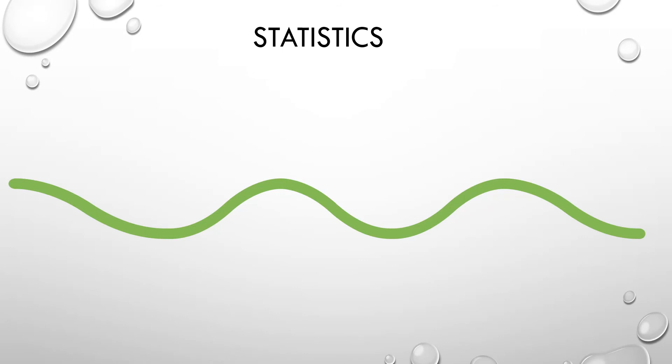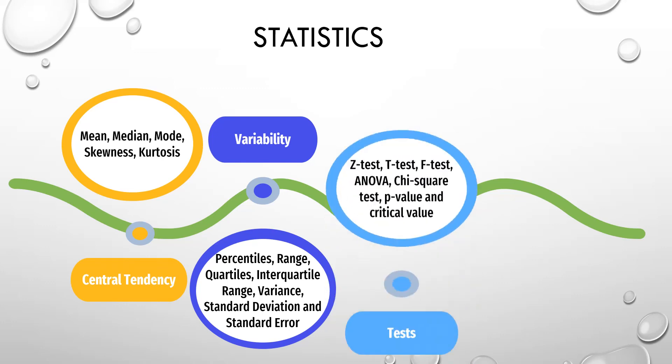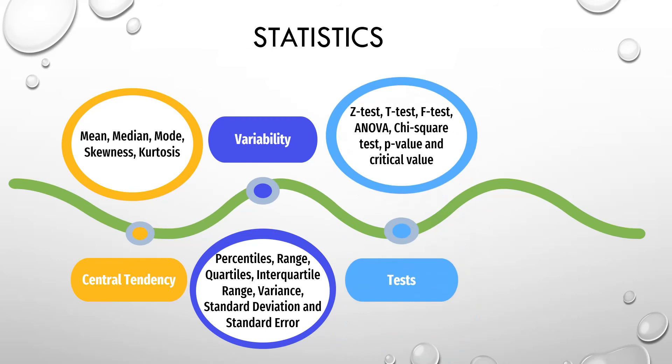Statistics for data science can be classified into four main points. The first one is central tendency, which covers the mean, median, mode, skewness, and kurtosis. The second one is variability - in variability we talk about percentiles, range, quartiles, interquartile range, variance, standard deviation, and standard error. The third point is about tests: we have z-test, t-test, f-test, ANOVA which means analysis of variance, chi-square test, p-value, and critical value. The last point is regression, which can be classified into two categories: linear regression and multiple linear regression.